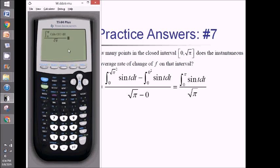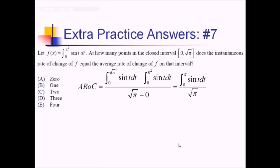I enter this expression in my calculator and store it as alpha A. Now for IROC: taking the derivative of f using the First Fundamental Theorem of Calculus, I replace the dummy variable with the upper limit x², giving sine of x². Then by the chain rule I multiply by the derivative of x², which is 2x. So IROC equals 2x·sin(x²). I'll graph this and the stored AROC constant to see how many times they intersect.